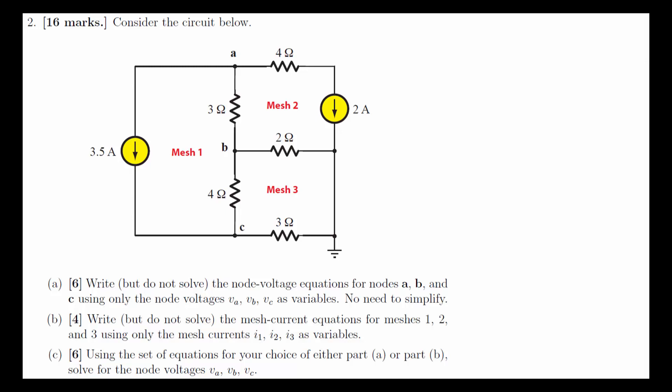We're going to solve question 2 from the 2018 midterm. This is a complex question with three parts. The first part asks us to write the node voltage equation from node voltage analysis. Part B asks for the mesh current equations using mesh current analysis. And then we pick either set of equations to solve for the node voltages in part C. In this video, I'm going to do part A and part C, and in the next video I'll do part B and part C, so you can see the difference between using the different methods to solve for the final answers.